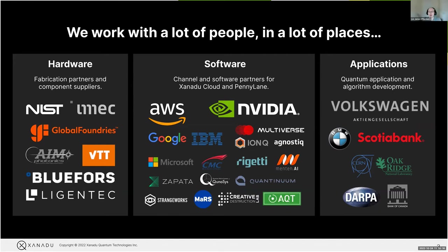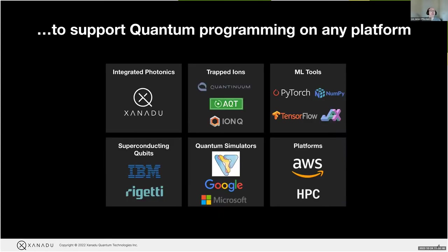We work with a lot of people in a lot of places. From the hardware side, we're building our own hardware at Xanadu. From the software side, we partner with a lot of different organizations and companies to add support to PennyLane. From the applications point of view, we also do a lot of development and research with other organizations. The goal is to support quantum programming really on any platform — no matter what hardware you have available, you should be able to build an example within PennyLane and use PennyLane for your hardware access.